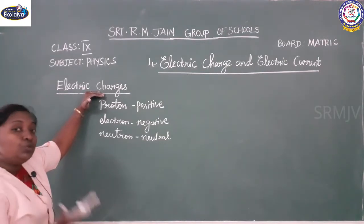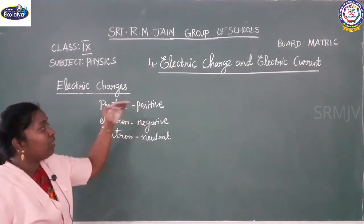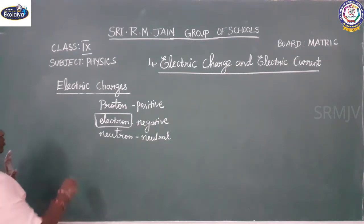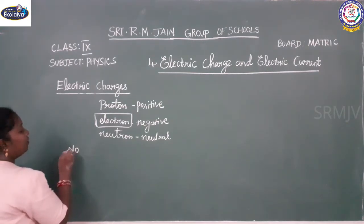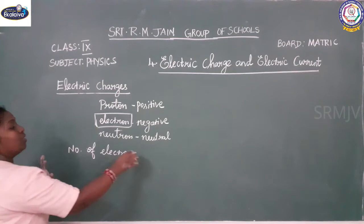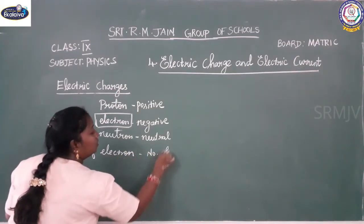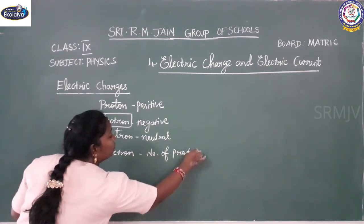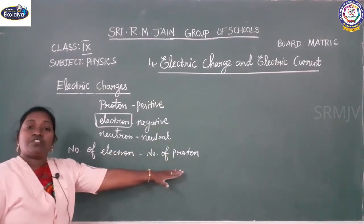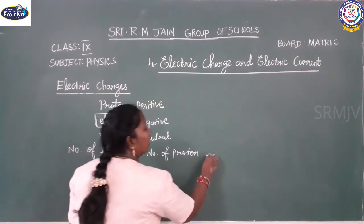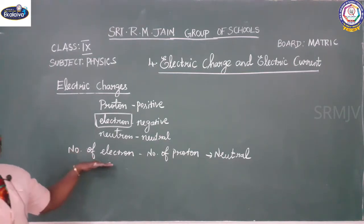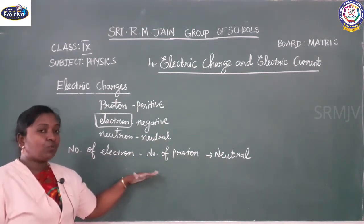Neutron carries a neutral charge, or it is chargeless. Now, when does an atom become neutral, positive, or negative? This depends on the electron. In an atom, when the number of electrons present is equal to the number of protons, the atom becomes neutral.